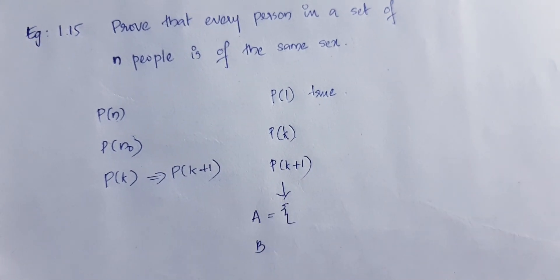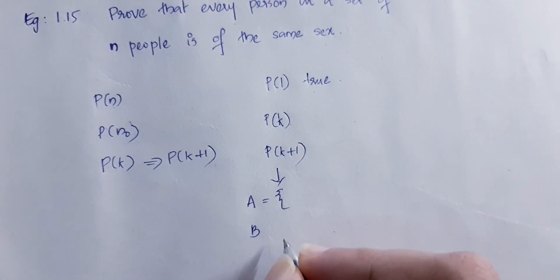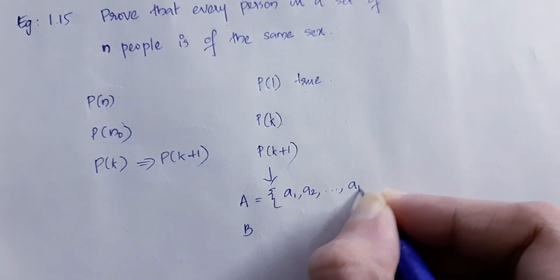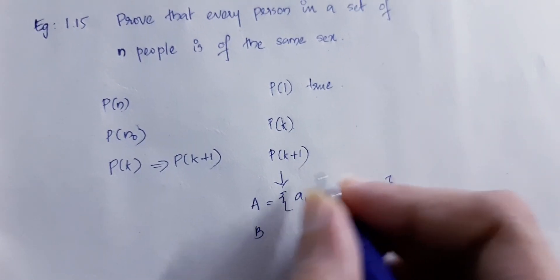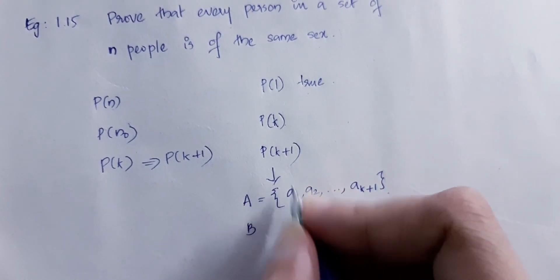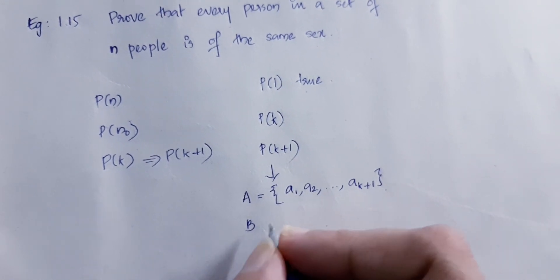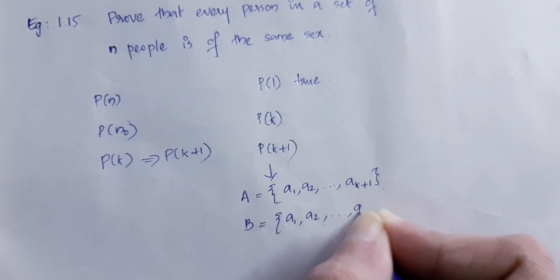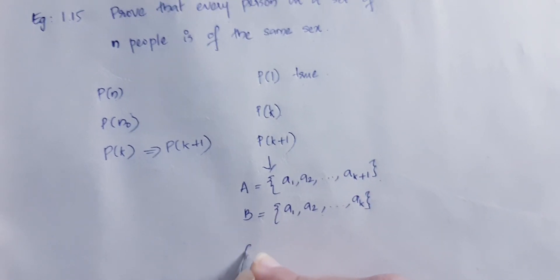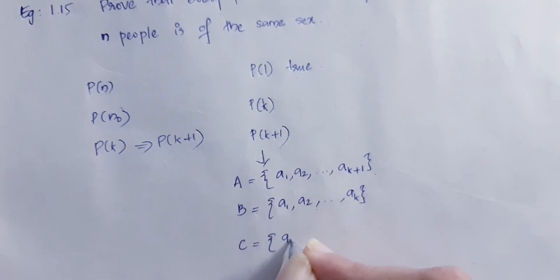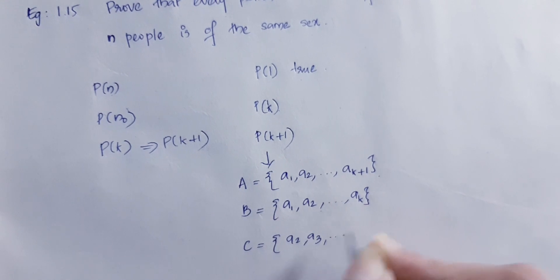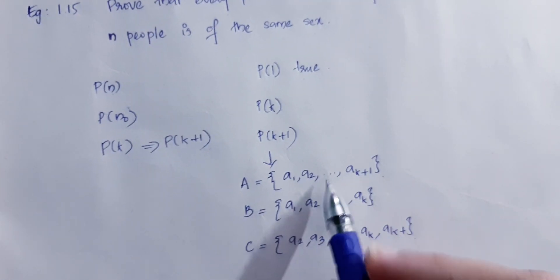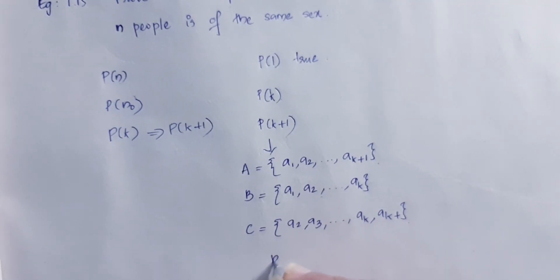In any set with k plus 1 elements a1, a2, ..., a(k+1), the elements are people. We define set B as {a1, a2, ..., ak} and one set C as {a2, a3, ..., a(k+1)}. Then B union C equals A.